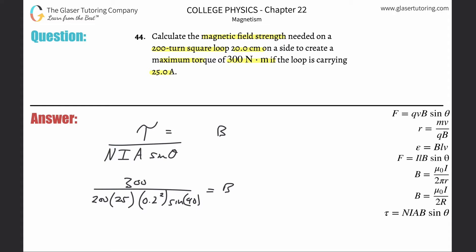And let's just calculate. So 300 divided by parentheses 200 times 25 times 0.2 squared. Sine of 90 is just one. So this works out to be about 1.5, I guess 1.50, sure, 1.50 Tesla. That's what the magnetic field strength is.